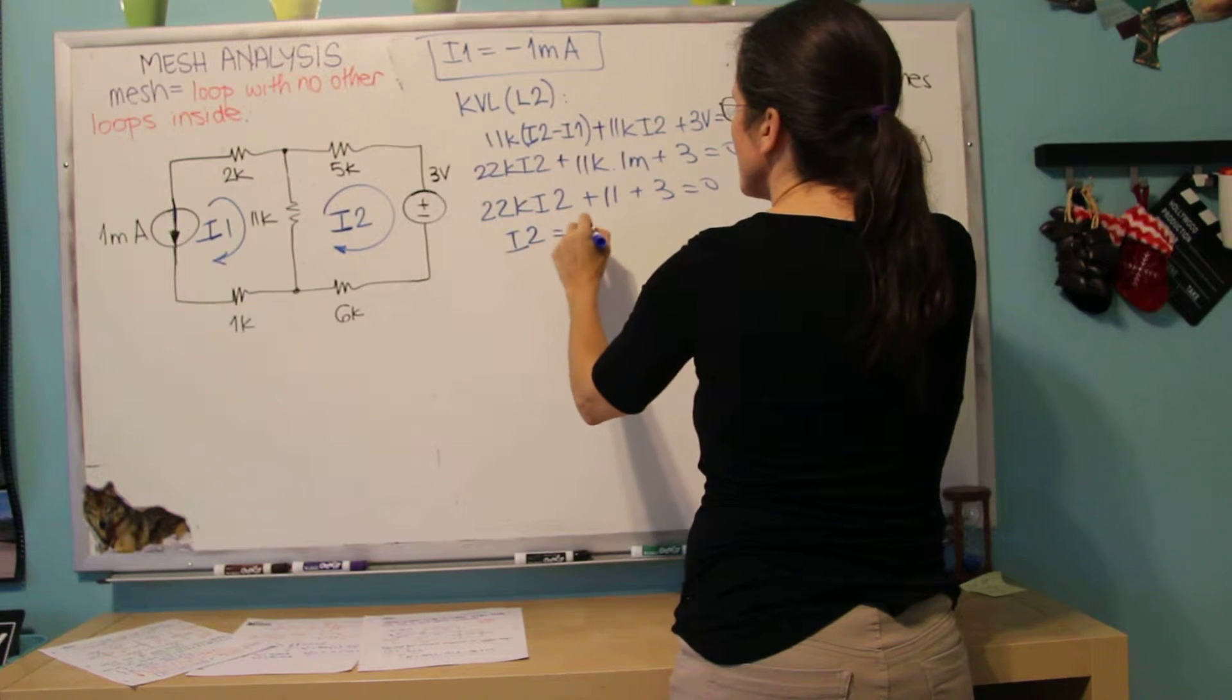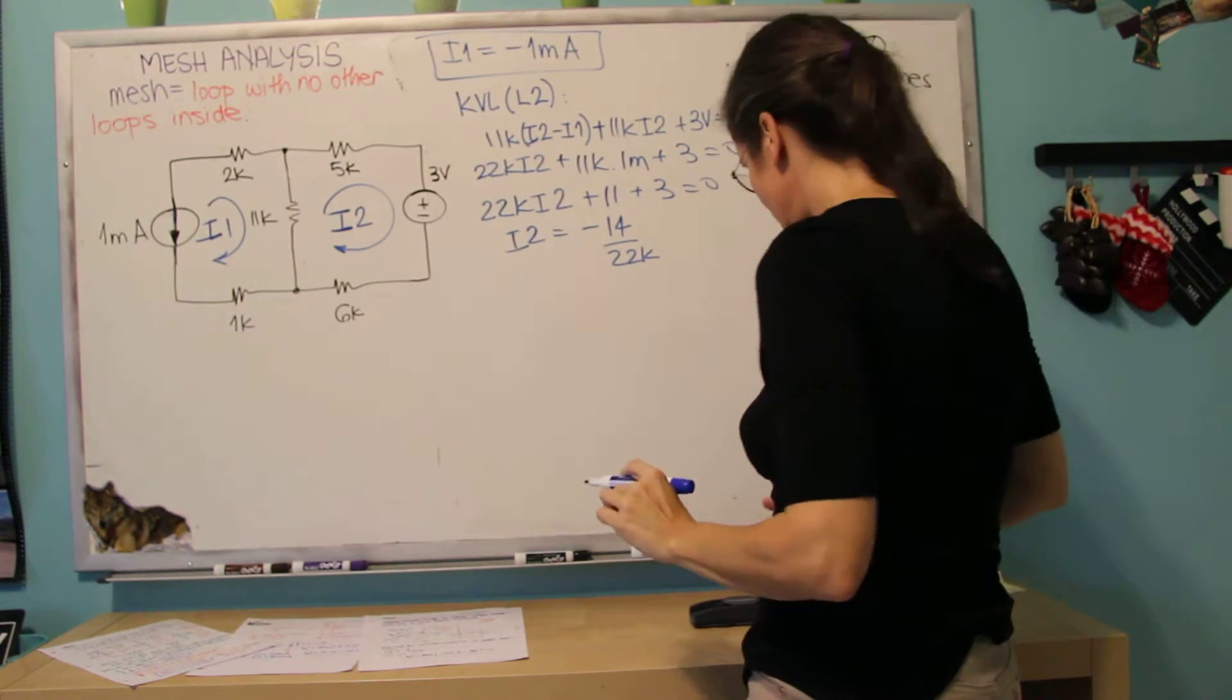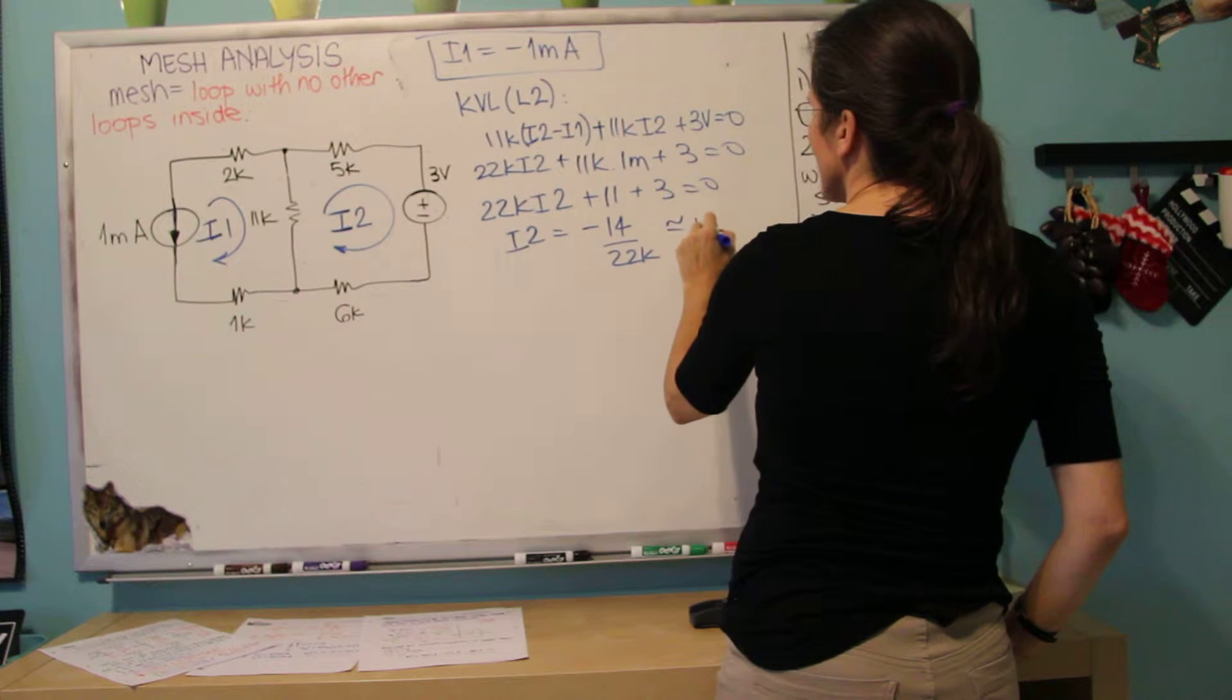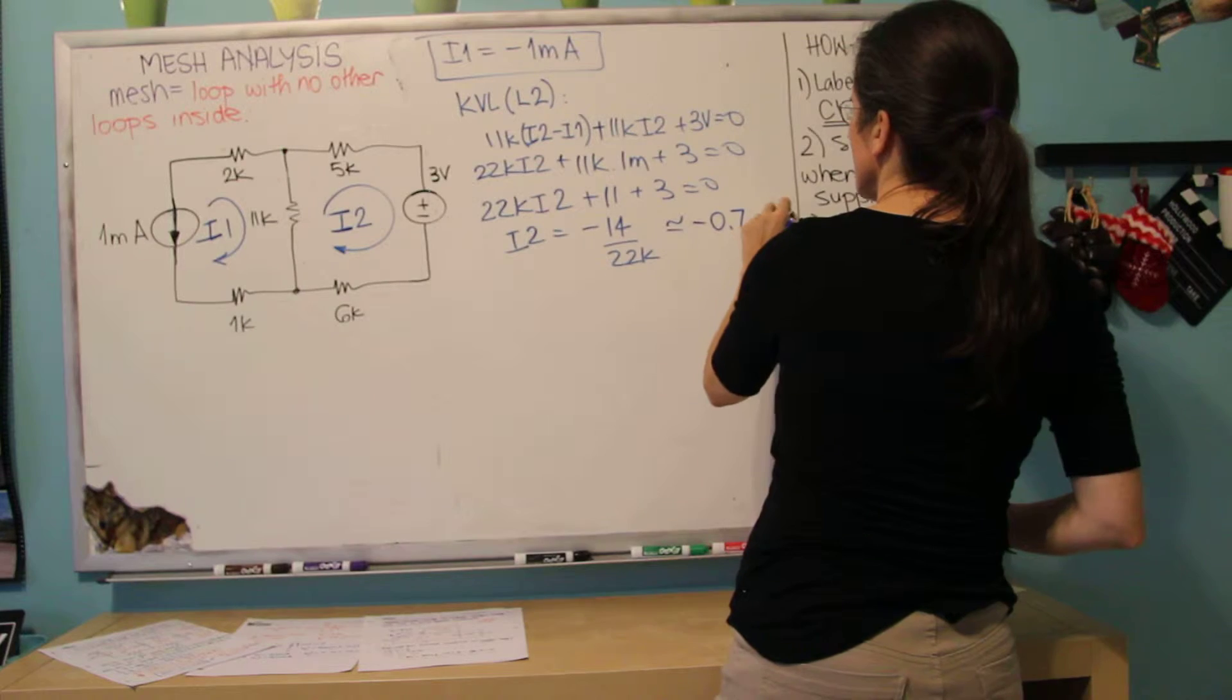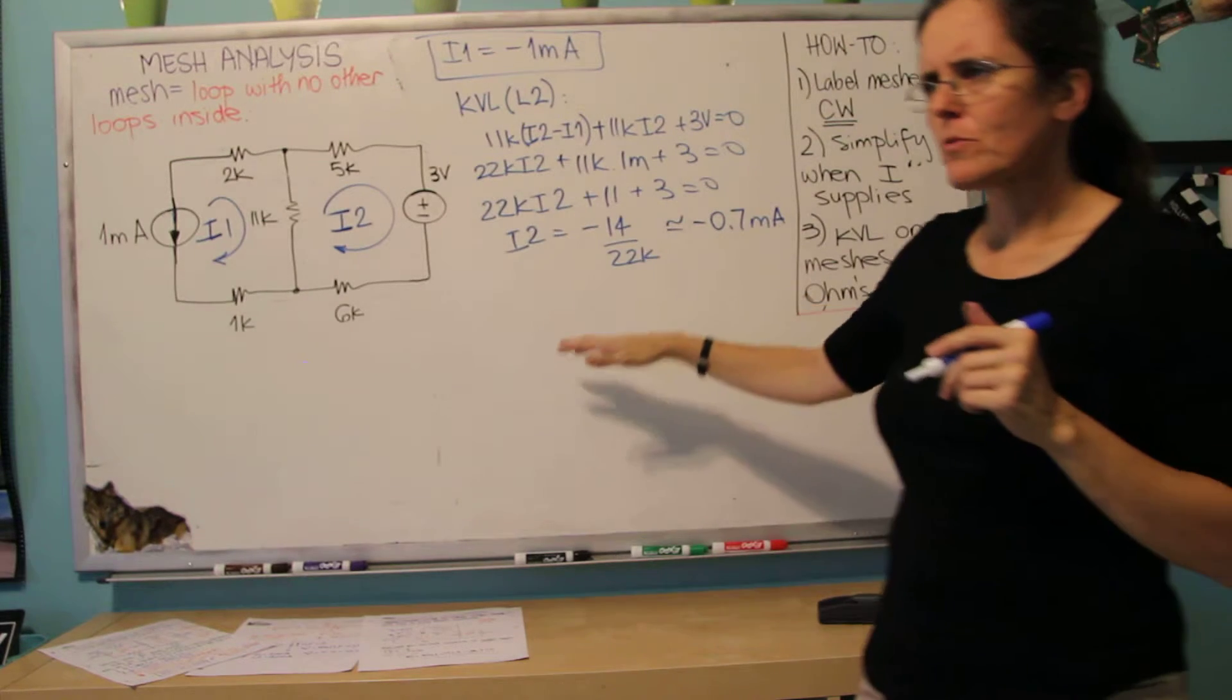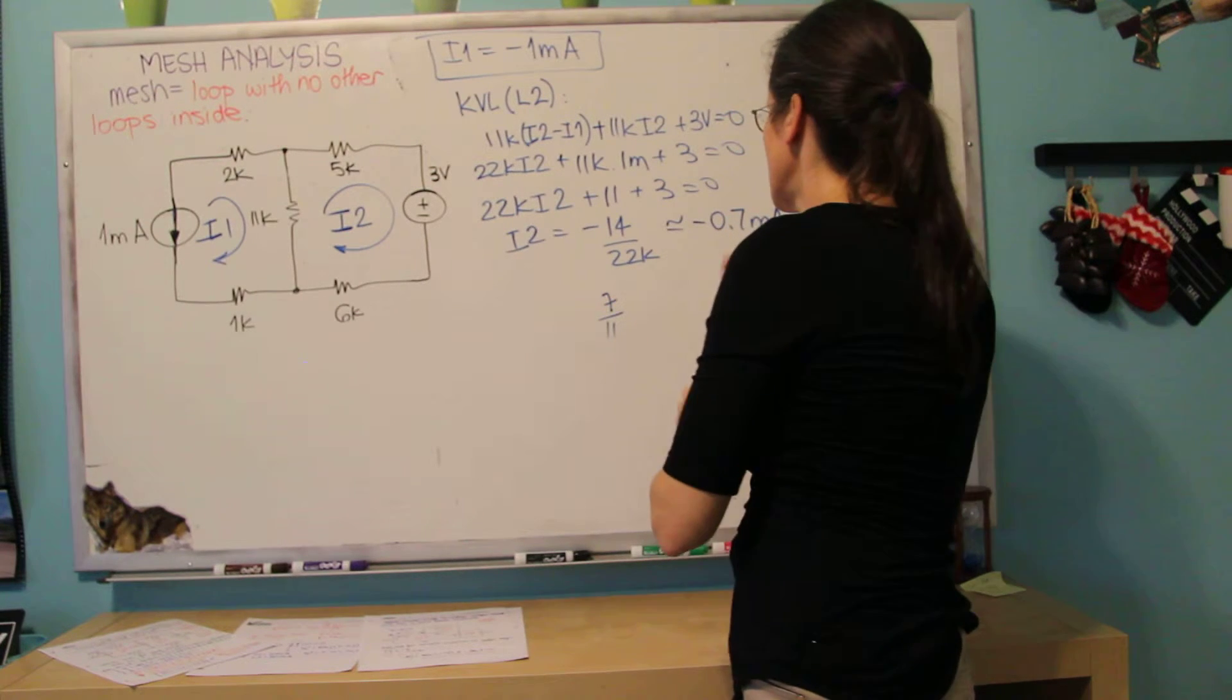So I2 will be minus 14k, which I don't know how much it is, so I'm going to call this 0.7, minus 0.7 milliamps. By doing this, approximately, yeah, 14 divided by 22 is like 7, let me see, 7 over 11, yeah, it's 0.7.